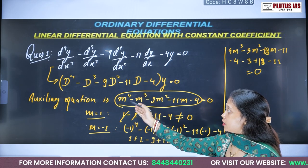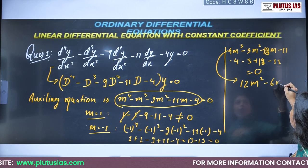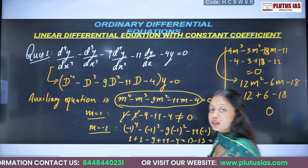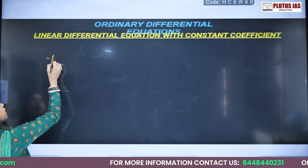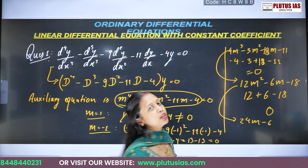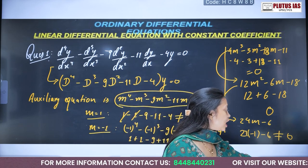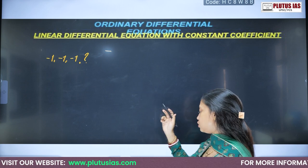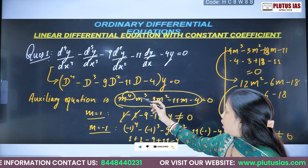Minus 1 is a repeated root three times. Let's differentiate one more time to check if it's four times: 24m minus 6. Substituting minus 1: 24 times minus 1 minus 6 is not 0 — it's negative. So minus 1 is repeated exactly three times. That means m plus 1 is a factor three times — (m+1)³. You can divide the polynomial m⁴ minus m³ minus 9m² minus 11m minus 4 by (m+1)³, and you'll get a linear factor m minus 4. So your fourth root is m equals 4.